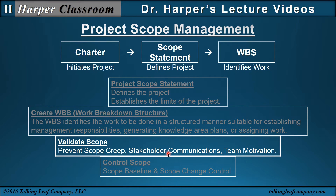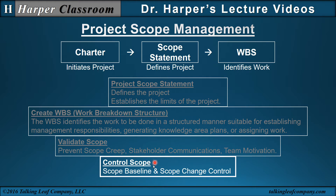Stakeholder communications are important because stakeholders must know what's being done, what's not being done, and when changes are being made. Team motivation: the validation of scope can motivate a team because we're moving toward the deliverable end. Control scope involves the scope baseline and scope change control. The scope baseline is the scope as it is at a point in time; the scope change control — part of integrated change control — manages changes to that baseline.